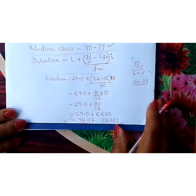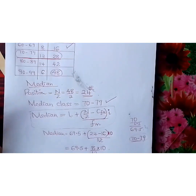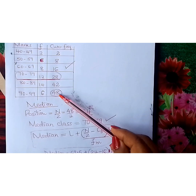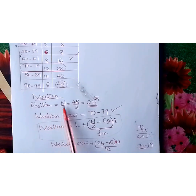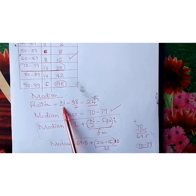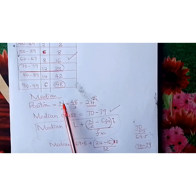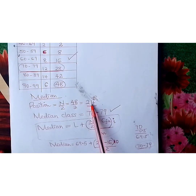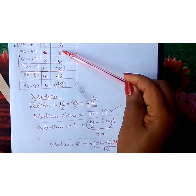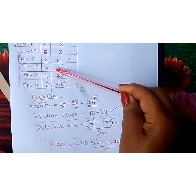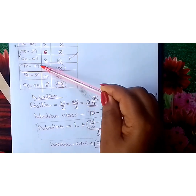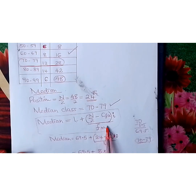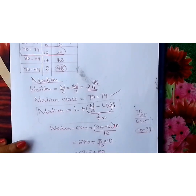There we are. So learner, go and practice. You first fill in the cumulative frequency accurately. Then get the position of the median — N over 2, which is 48 over 2 = 24. Trace where 24 falls in the cumulative frequency column. You see that 24 lies under the 70 to 79 row, so that is the median class. Then apply the formula accurately to get the answer.